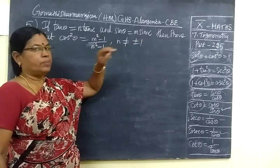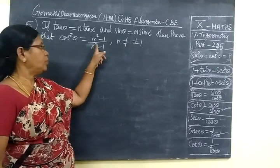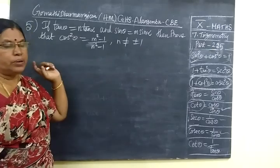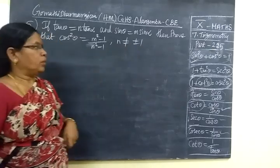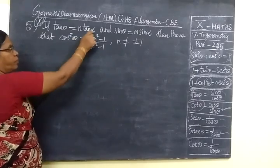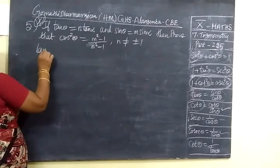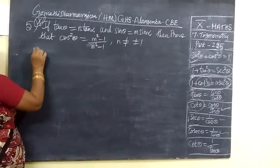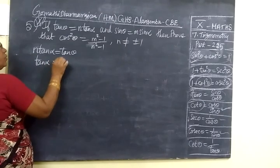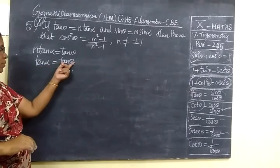Let's say n is not equal to plus or minus 1. The key idea is to eliminate α. So from tan θ = n tan α, we get tan α = tan θ / n. This expresses tan α in terms of θ.